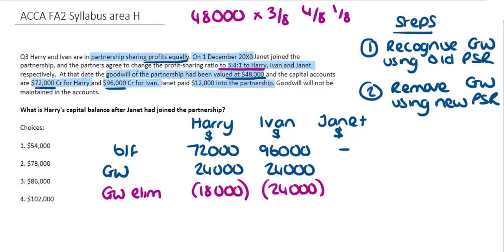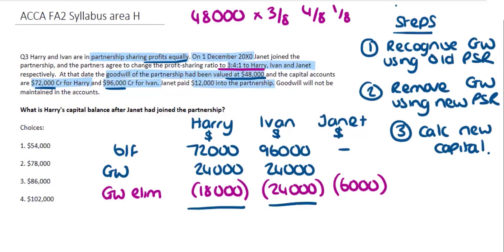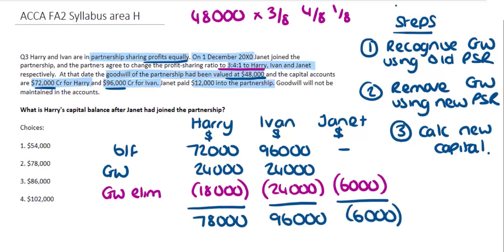The third and final step is to calculate the new capital balance using the working we've set out. Harry's capital balance is now $78,000, and from the options given the second option is the correct answer.